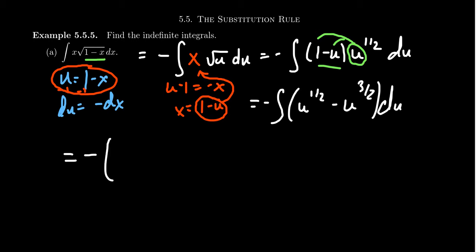And so using the power rule for u to the one half, the power will raise to three halves. You add one to it, divide by three halves. For the next one, we raise the power by one. So it becomes five halves, then divide by five halves. And don't forget your plus c.